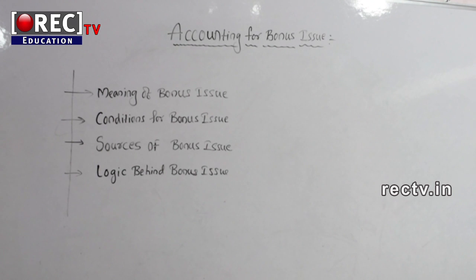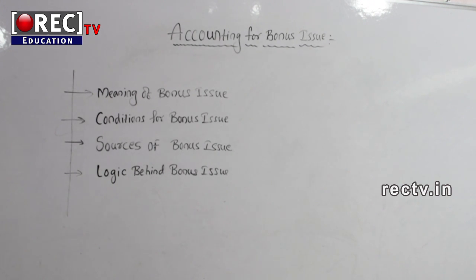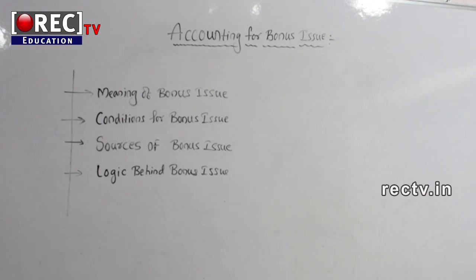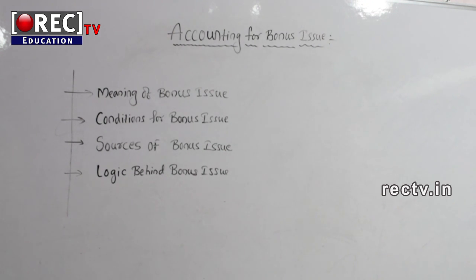Under Case B, for partly paid up shareholders or conversion of partly paid into fully paid up shares, we can use capital reserve and free reserves. However, we should not use capital redemption reserve and securities premium for those shareholders who have partly paid up equity shares.